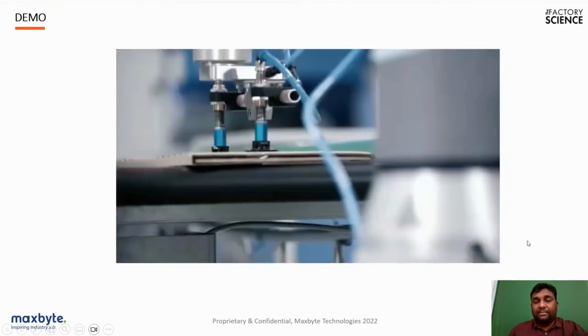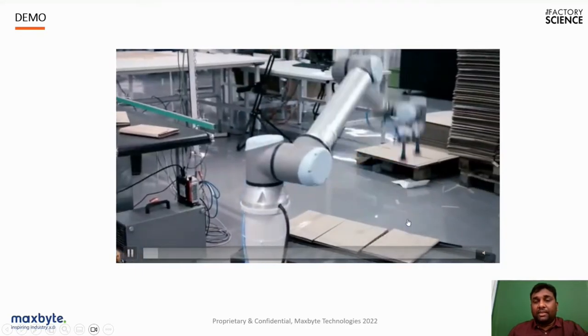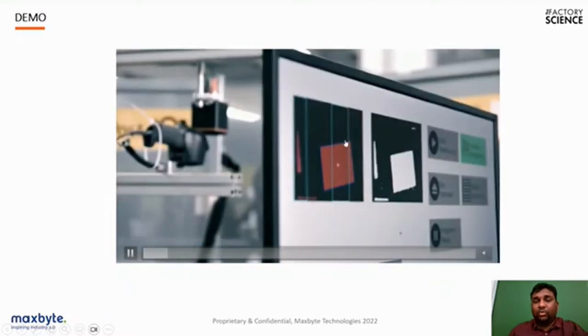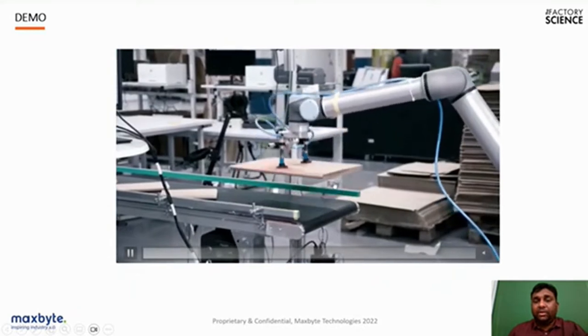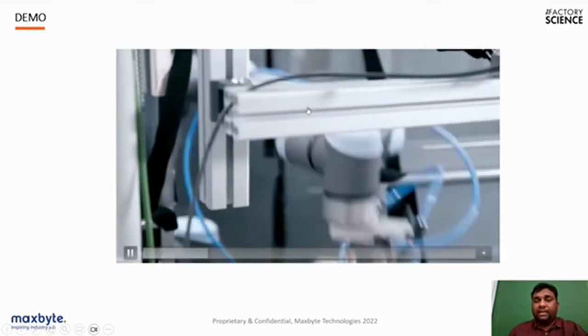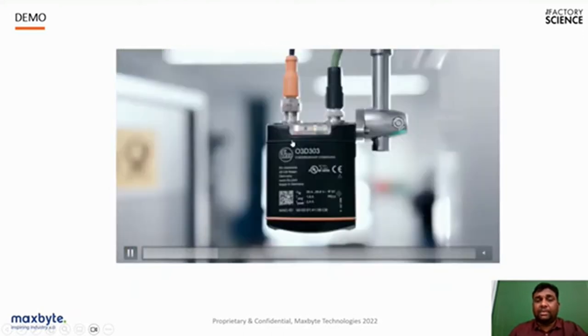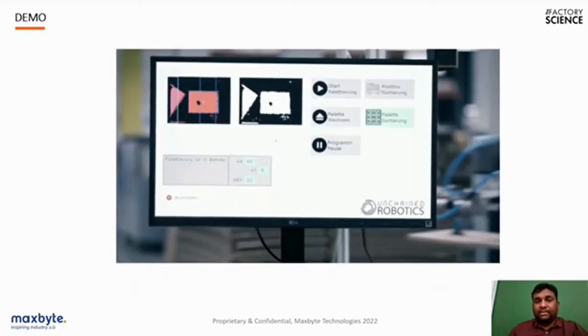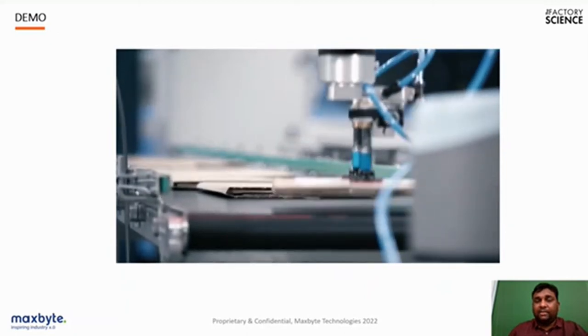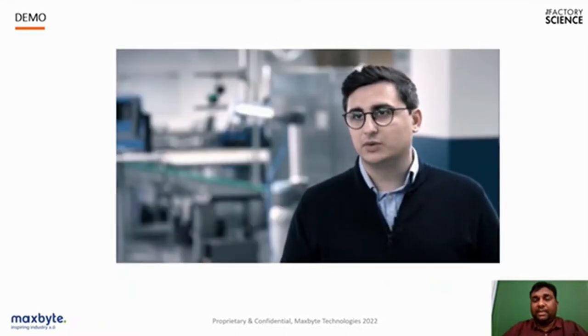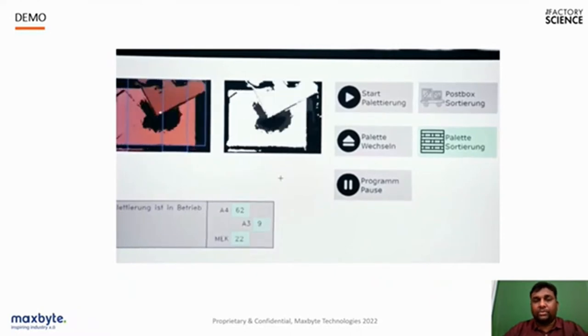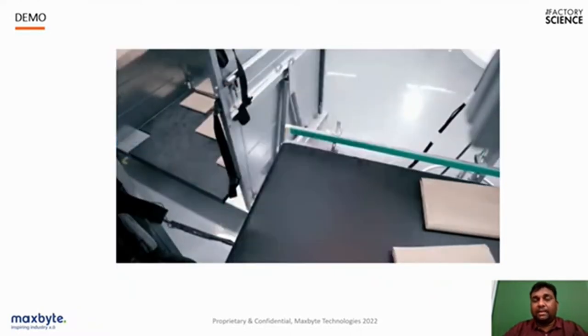Another use case shows a machine vision camera installed on a cobot arm. The cobot arm identifies and segregates carton boxes based on their sizes, automatically placing them in the required area according to their size. This demonstrates that machine vision cameras can easily be integrated with cobots and robots to enable complete end-to-end automation.